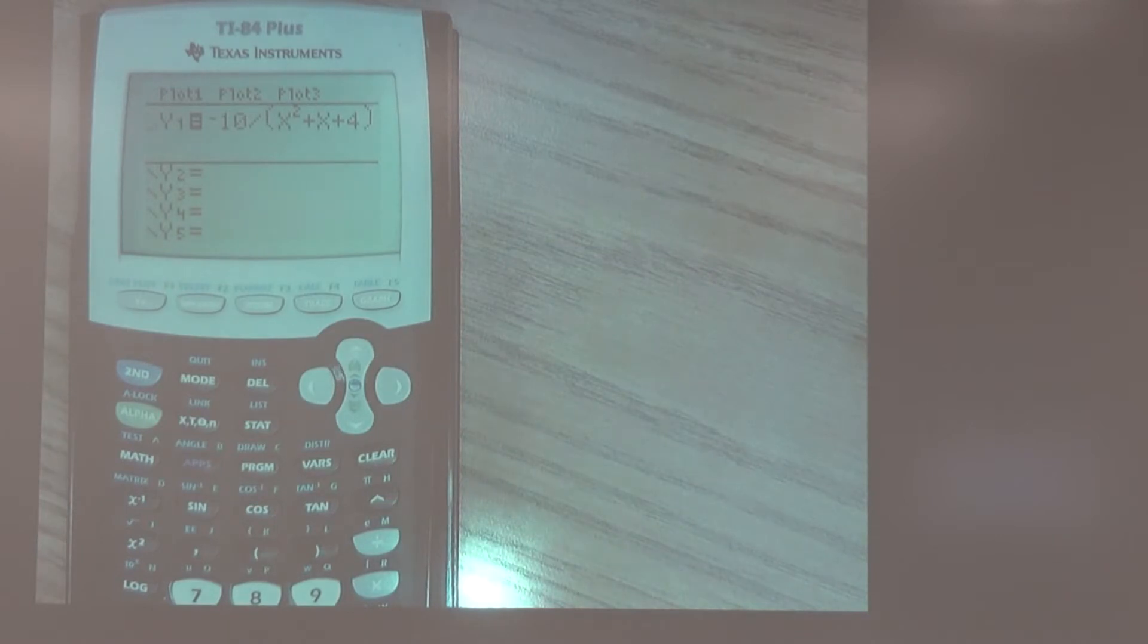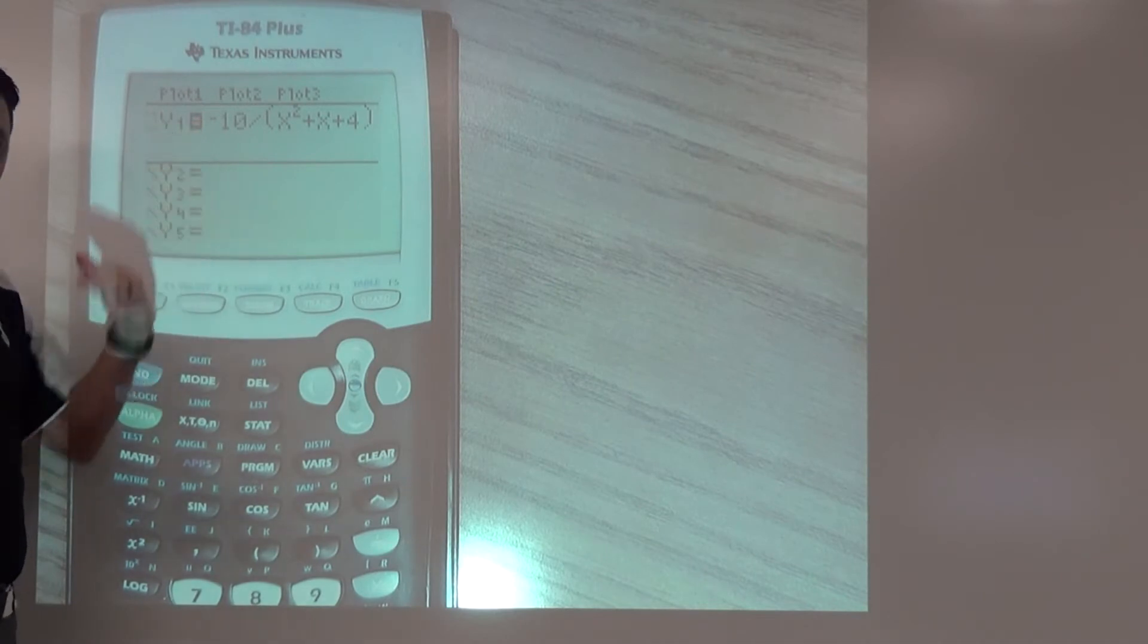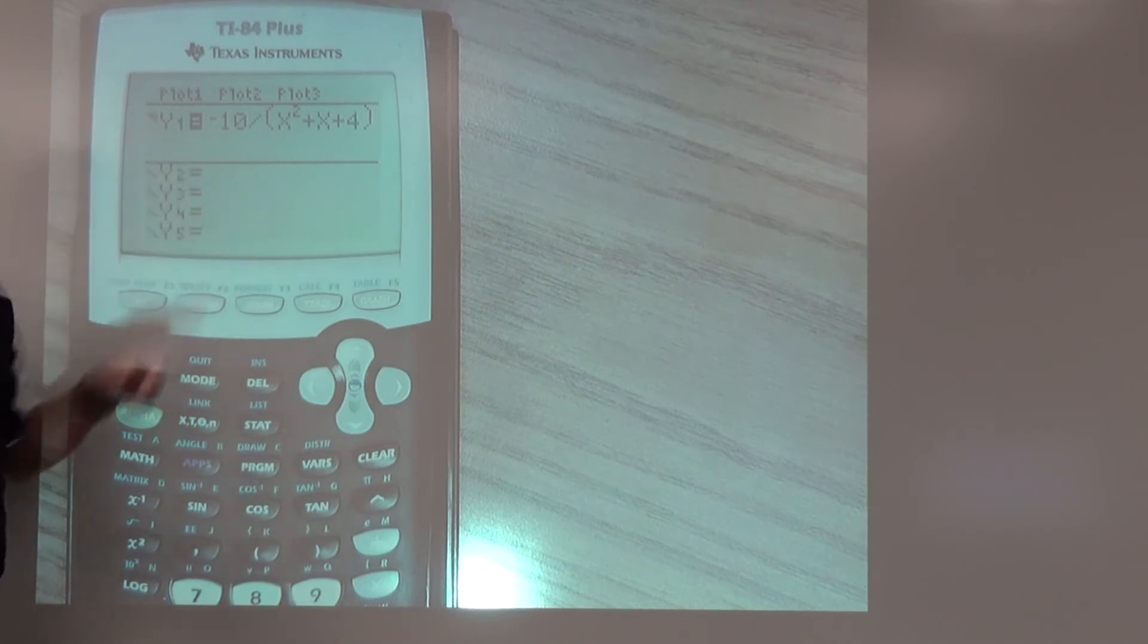So pressing enter once allows us to make the line thicker, which could be helpful if we're trying to input a couple different functions and we want to be able to distinguish. I know some of the more modern calculators have different colors, which also helps. If I press again, notice now this time it's shaded above. That would be a y is greater than situation, and that's what we have here. We have y is greater than, so that's the one I want to choose, and I'm going to hit graph.